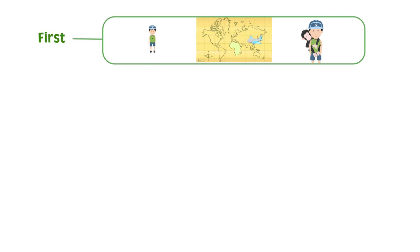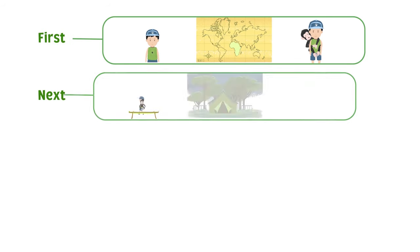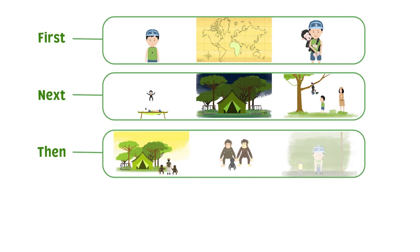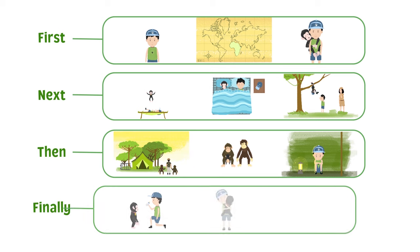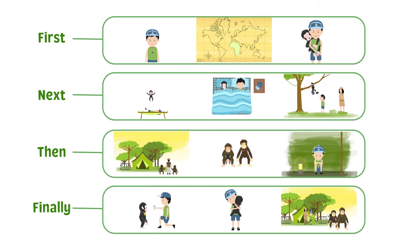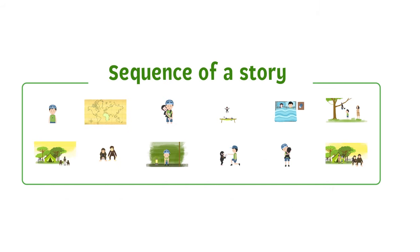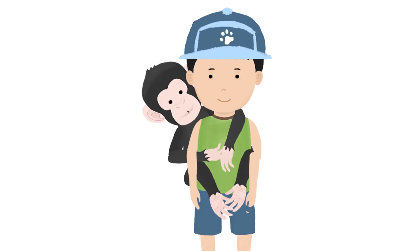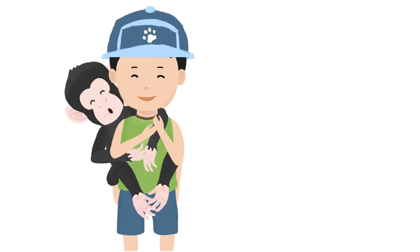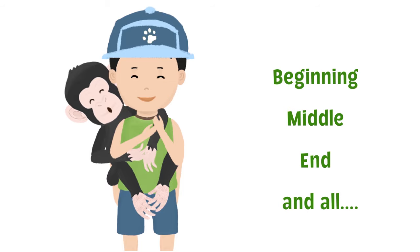When you ask what happened first, what happened next, what happened after that, and what happened finally, you get the sequence of a story. When you find the sequence of a story, you can retell it to someone easily too. Go on then, try to remember John's story — beginning, middle, end and all.